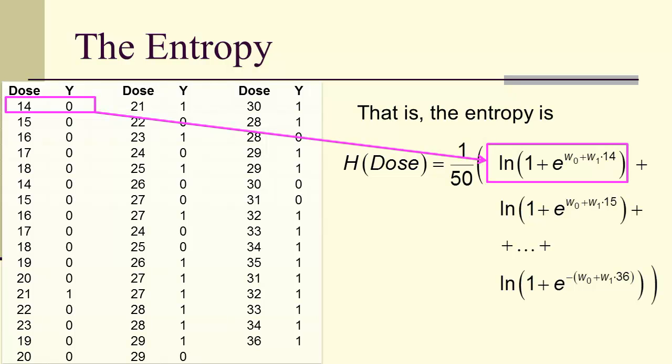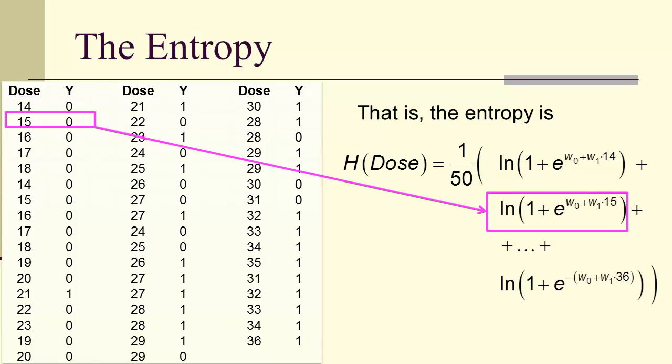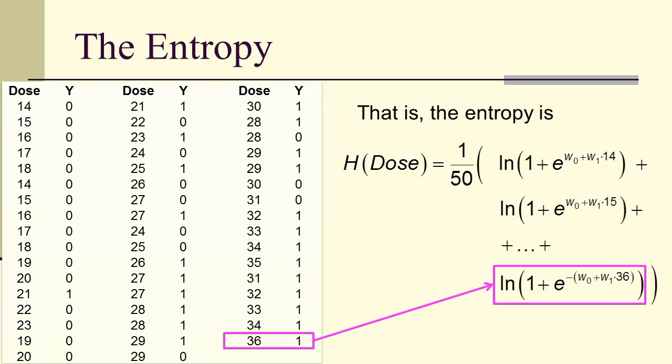And so 14, 0, that corresponds to class 0, so we don't have the negative in the exponent. Same with 15. 36, however, is in class 1, so therefore we get a different model for the information.